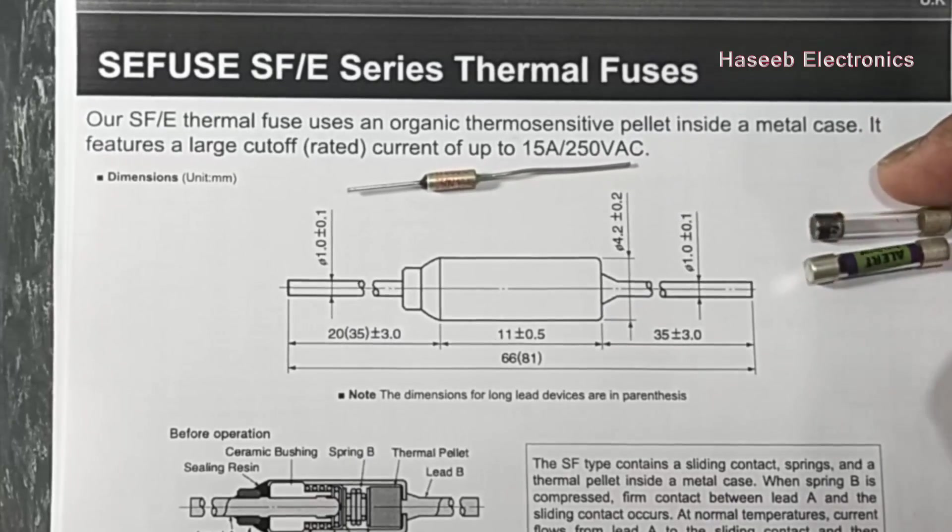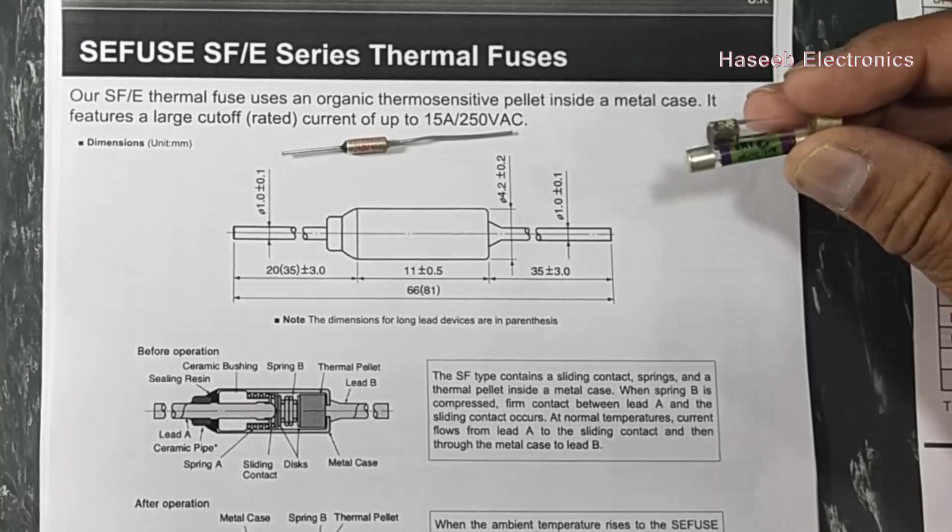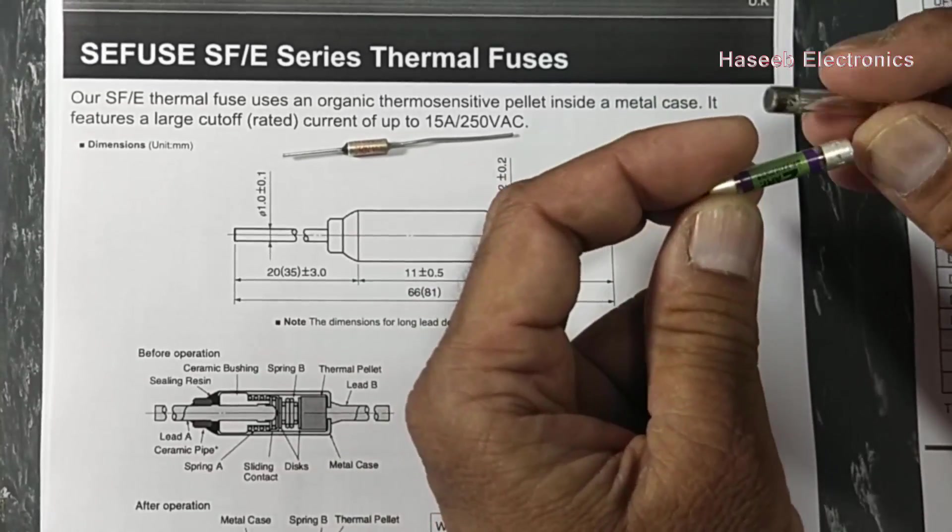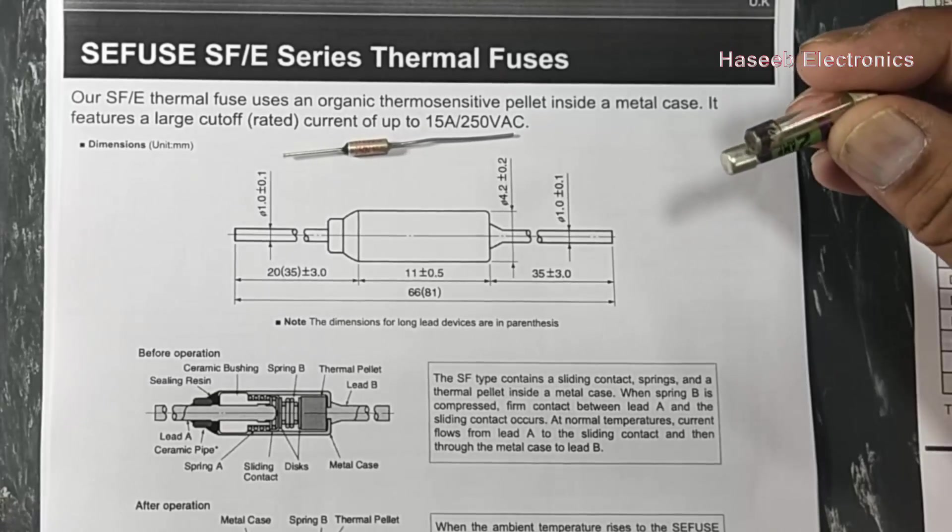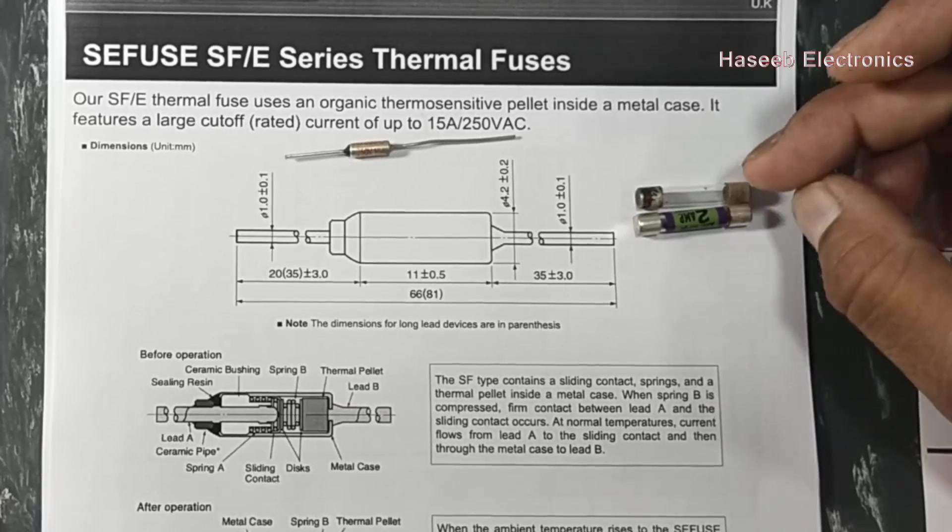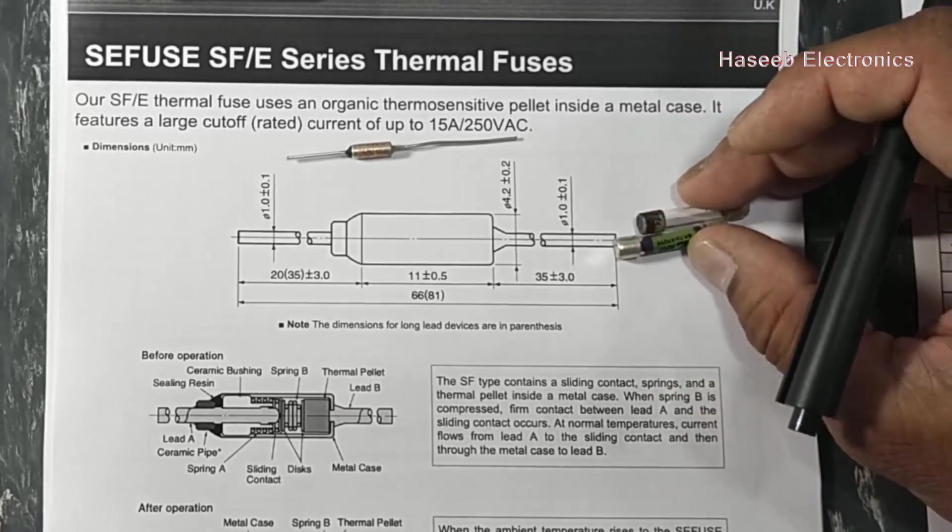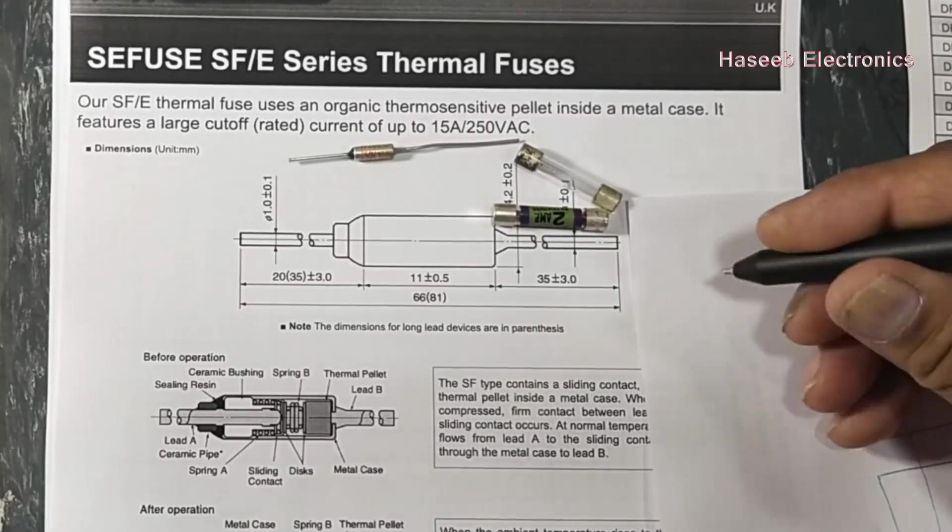When we see any electrical or electronic equipment, for safety purposes we use fuses. Normally the fuse is used to protect from over-current, to limit the current for protection purposes. For example, any equipment that is working at 10 ampere.